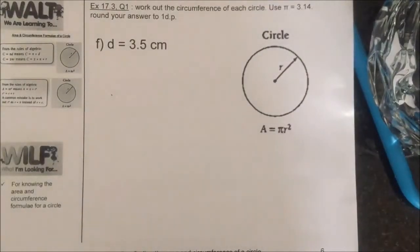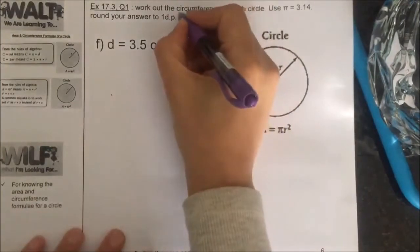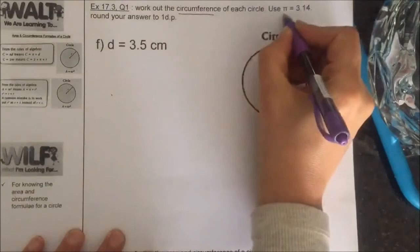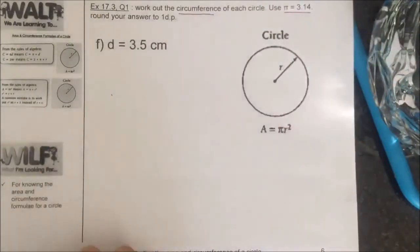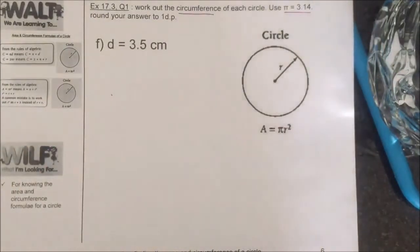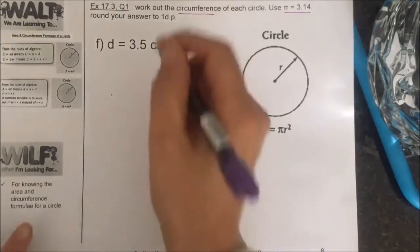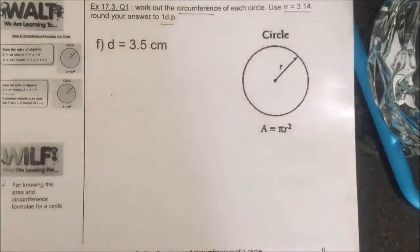Hi there, finding the circumference of a circle is what's requested in this question. They ask you to use pi as 3.14. I will mention once again that if pi is not asked to be used as 3.14 and you are allowed to use the calculator, then you need to insert the pi button. And they want us to round our answer to one decimal place.